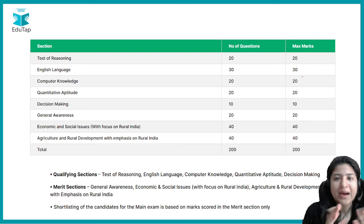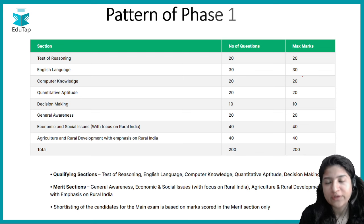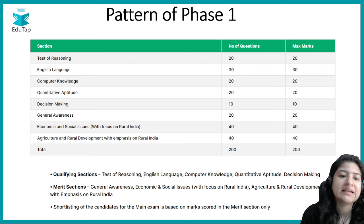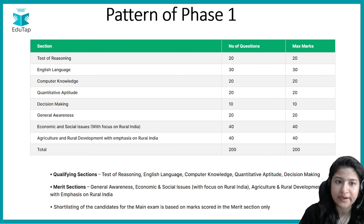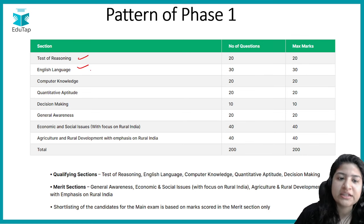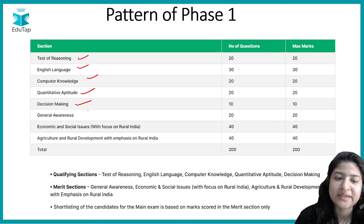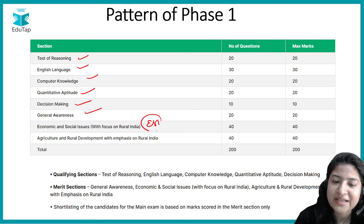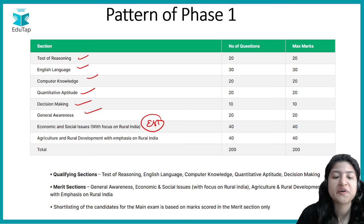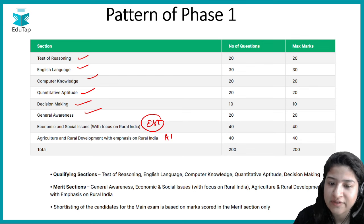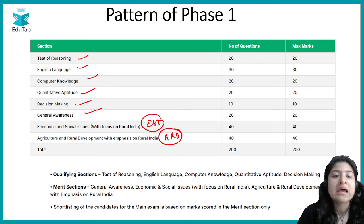In your pattern of Phase 1 for NABARD Grade A examination there are 8 subjects: reasoning, English, computer knowledge, quants, decision making, general awareness, ESI (Economic and Social Issues) which we are covering today, and Agriculture and Rural Development, that is your ARD.